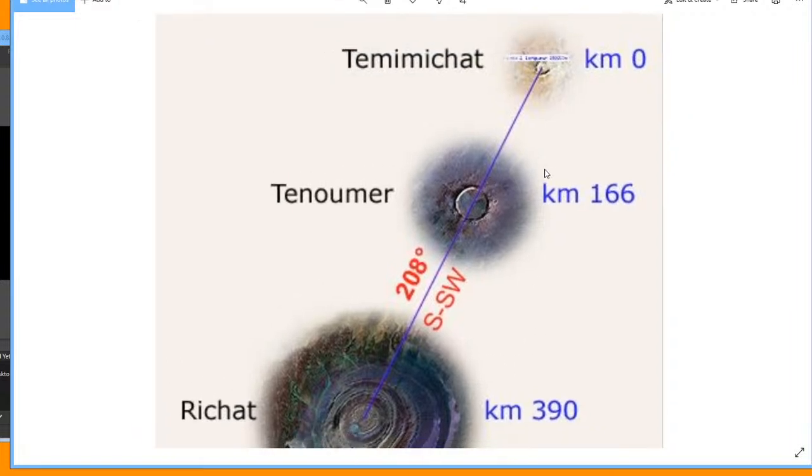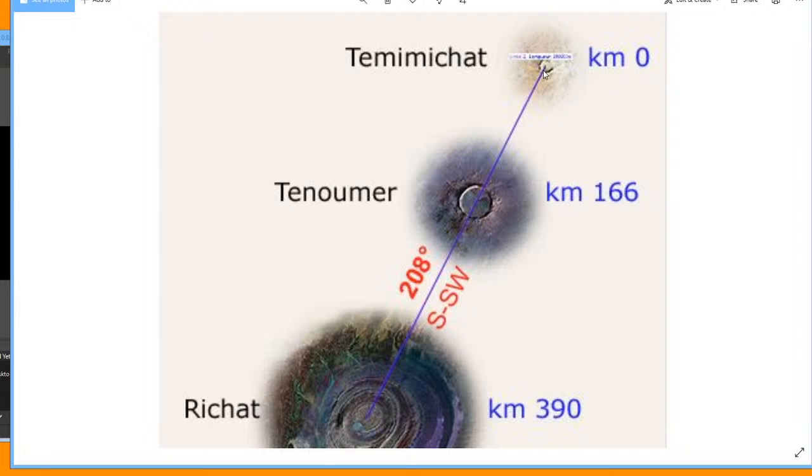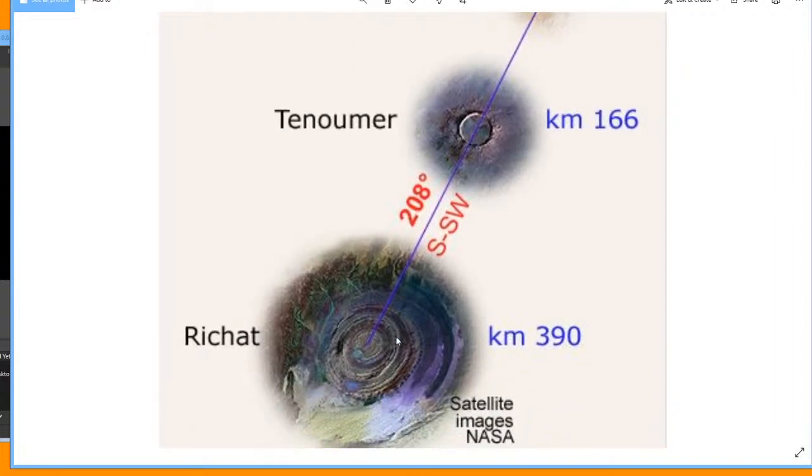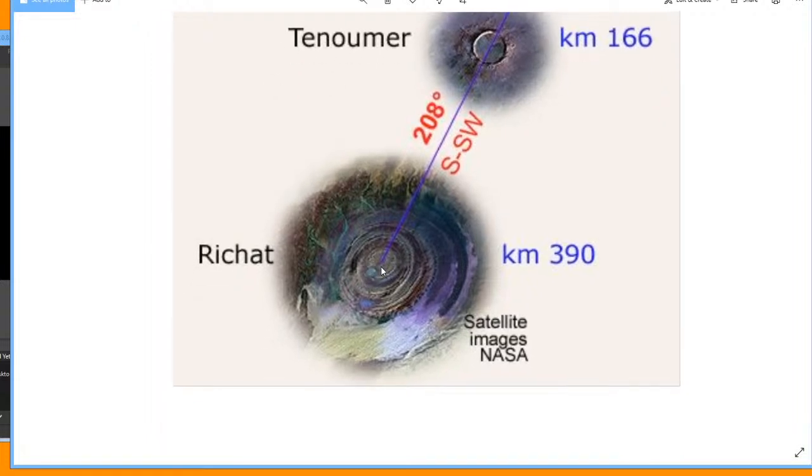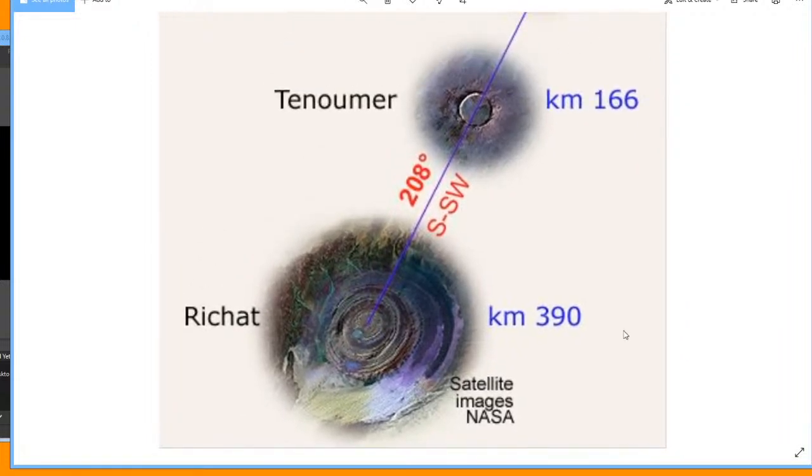Starting from the Temi Mishat Crater, they've got the Tenamer Crater, and then they've got this one right here that went into the water. I mean, these are shorelines, and destroyed a target right there. There's three craters right in a row.